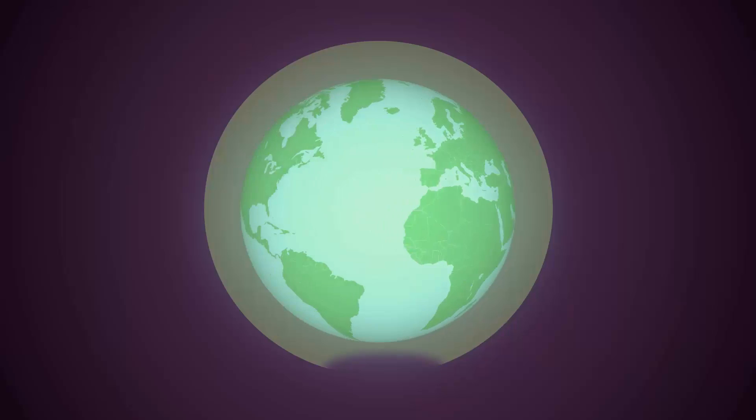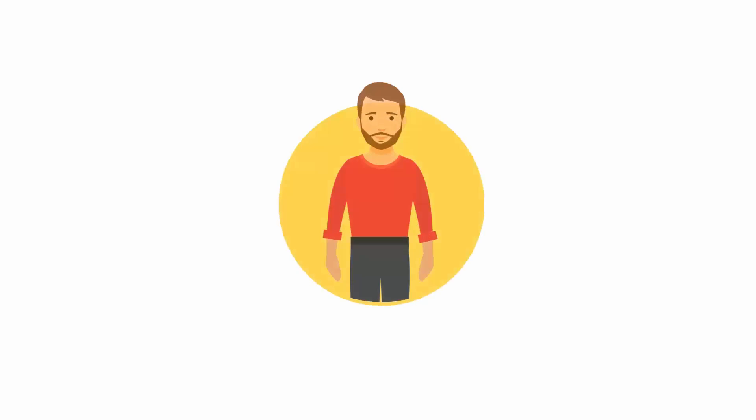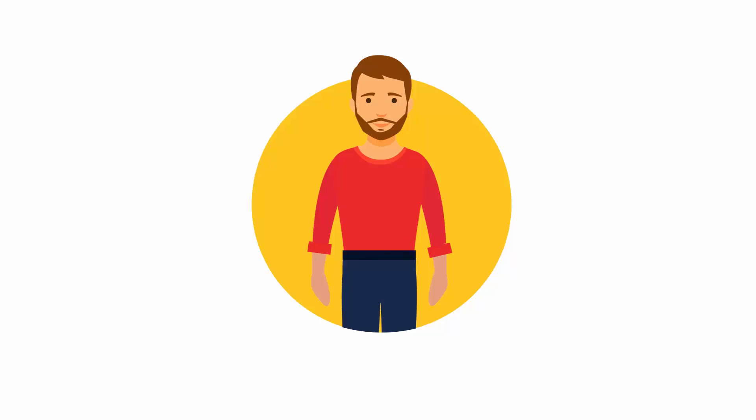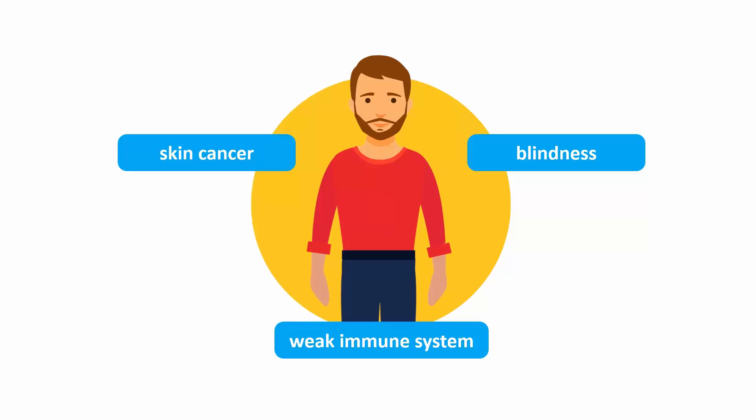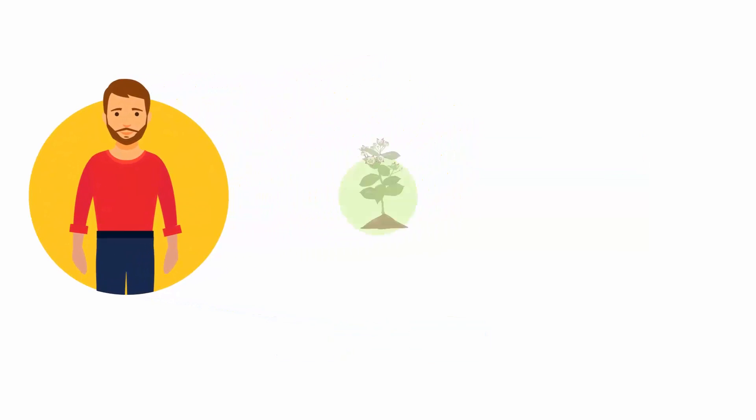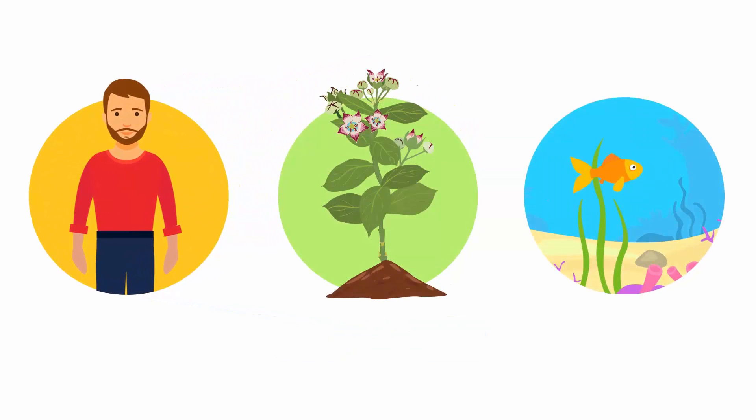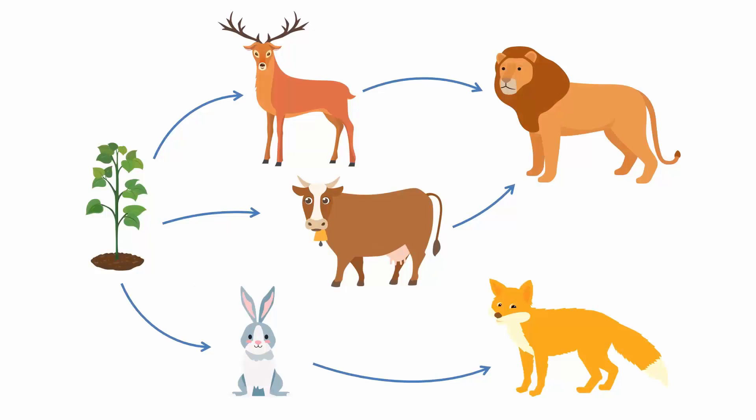As a result, the harmful ultraviolet rays penetrate through the atmosphere and reach the Earth's surface. These harmful rays may affect human health by causing skin cancer, blindness, and a weak immune system. These rays also affect plant growth and ocean life, thus disturbing the entire ecosystem.